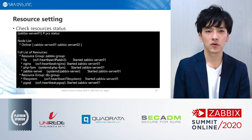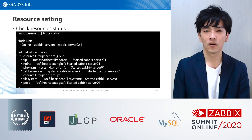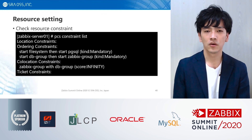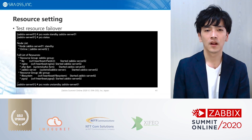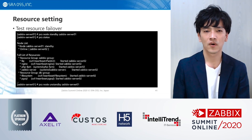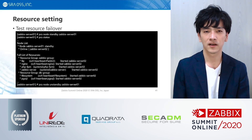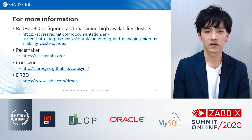You can confirm resource status via the PCS status command. If all resources start on the same node, it is OK. You can also confirm constraints via the PCS constraint list command. Lastly, confirm by executing a failover. Enter Zabbix Server 01 into standby state via the PCS node standby command. Then failover is executed and all resources start on Zabbix Server 02 automatically. This is an example of Active-Passive Cluster setup using Pacemaker, Corosync, and DRBD.